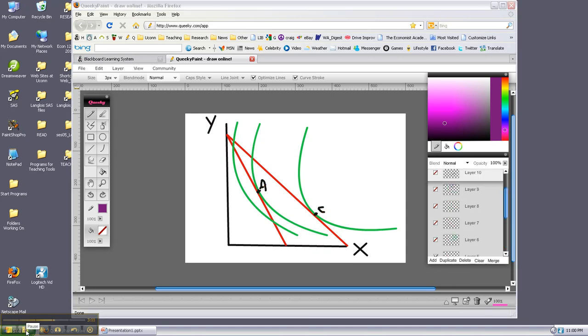Let's diagram the income effect. We're going to bring the new line back down so it's just tangent to the original indifference curve. Here it is. And then the point of tangency at B.